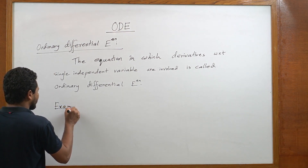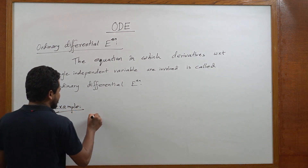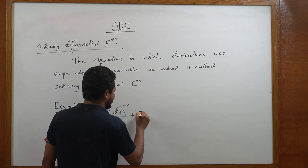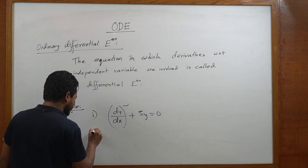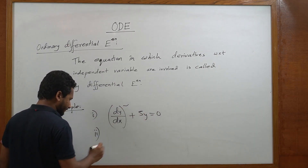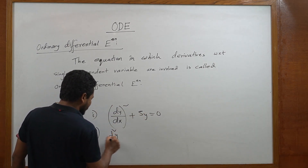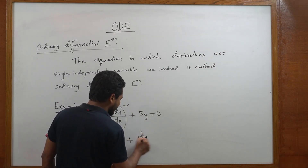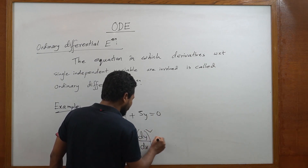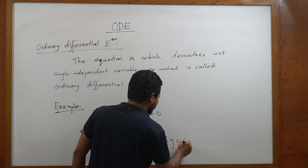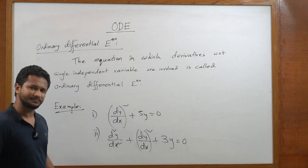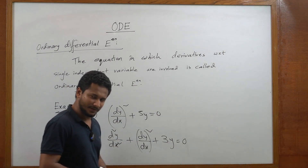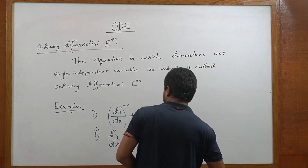Examples of ODE: First example: (dy/dx)² + 5y = 0. Second example: d²y/dx² + (dy/dx)² + 3y = 0. These kinds of examples are ordinary differential equations because there is no partial derivative operator.